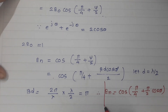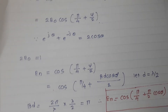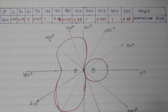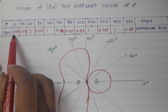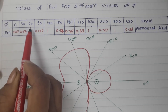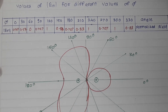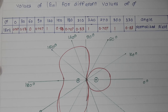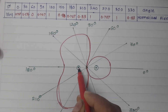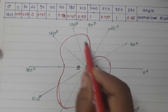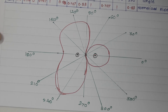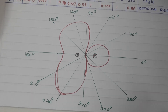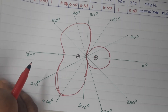Using this formula, we calculate En for different values of φ. At φ = 0°, En = 0.707; at φ = 30°, En = 0.54; at φ = 60°, En = 0. Plotting the radiation pattern for this configuration — with elements one and two placed along the axis — yields the corresponding directional pattern.